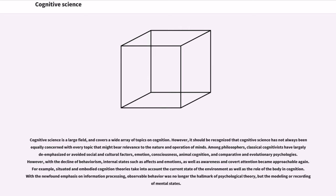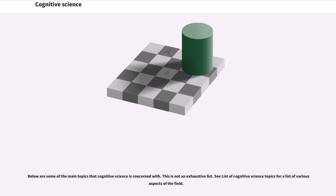Cognitive science is a large field, and covers a wide array of topics on cognition. However, it should be recognized that cognitive science has not always been equally concerned with every topic that might bear relevance to the nature and operation of minds. Among philosophers, classical cognitivists have largely emphasized or avoided social and cultural factors, emotion, consciousness, animal cognition, and comparative and evolutionary psychologies. However, with the decline of behaviorism, internal states such as affects and emotions, as well as awareness and covert attention became approachable again. For example, situated and embodied cognition theories take into account the current state of the environment as well as the role of the body in cognition. With the newfound emphasis on information processing, observable behavior was no longer the hallmark of psychological theory, but the modeling or recording of mental states.